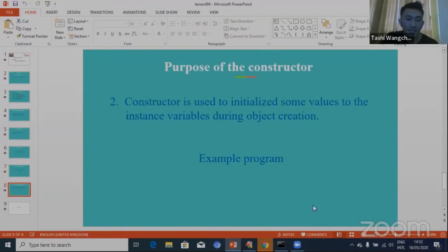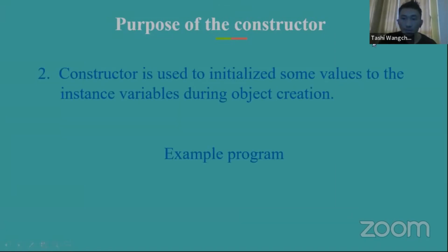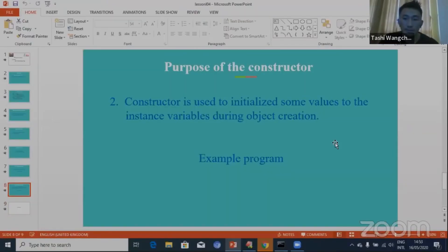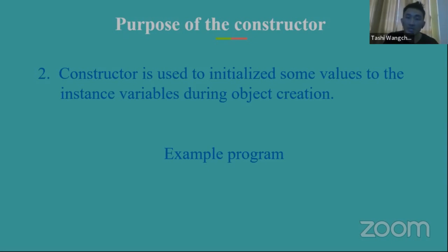Purpose of the constructor number two: constructors are used to initialize some values to the instance variables during object creation. This purpose is used 75 percent in real-time project development, so you have to understand this clearly. The constructor is used to initialize some values to the instance variable during the object creation. We want to understand this with a practical example.